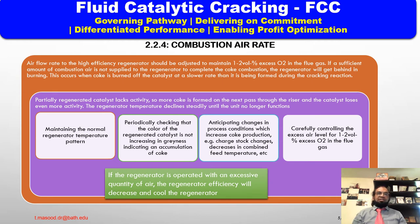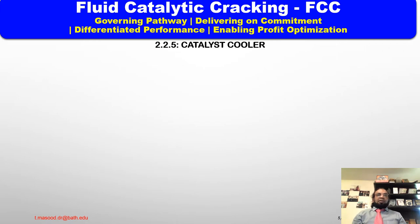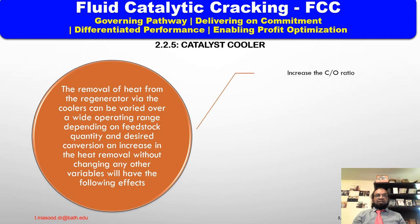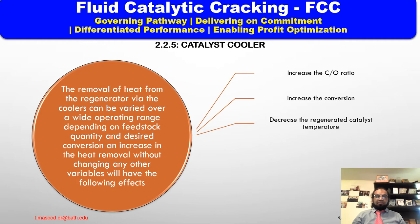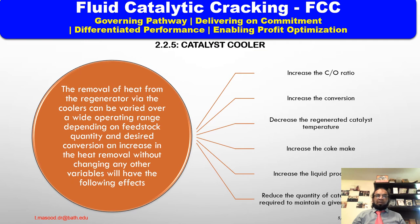The fifth instance of regeneration is the catalyst cooler. The removal of heat from the regenerator via the cooler can be varied over a wide operating range depending on feed stock quality and desired conversion rate. An increase in heat removal without changing any other variable will: (1) increase the catalyst-to-oil ratio, (2) increase the conversion rate, (3) decrease regenerator catalyst temperature, (4) increase coke make, (5) increase liquid product yield, and (6) reduce the quantity of catalyst addition required to maintain a given activity level.